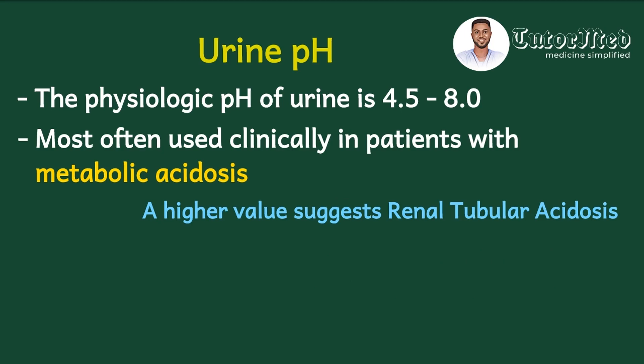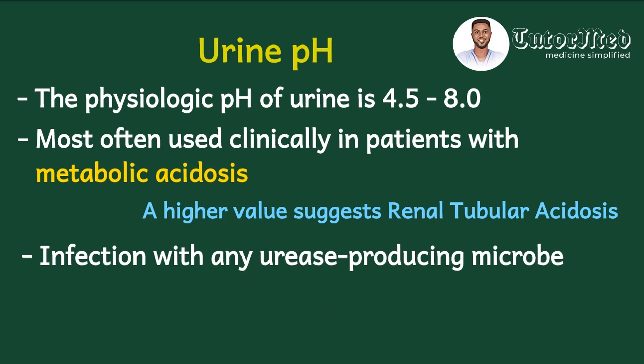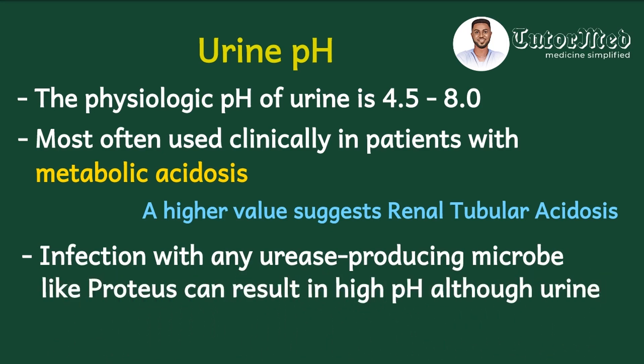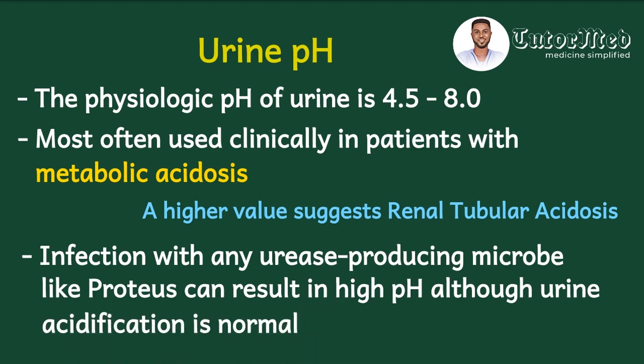Remember that a urine abnormality does not necessarily mean the problem is from the kidneys. A high urine pH may indicate an infection with a urease-producing microbe like Proteus, which breaks down urea into ammonia. Since ammonia is basic, it raises the pH of the urine even though the kidneys' acidification was normal. So a high pH does not necessarily mean the kidney failed to do its job — it could be an infection in the urinary tract.